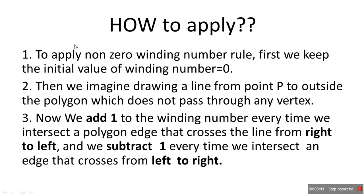How to apply the non-zero winding number rule: First, we keep the initial value of the winding number equal to zero. Second, we imagine drawing a line from point P to outside the polygon, which does not pass through any vertex. Third, we add 1 to the winding number every time we intersect a polygon edge that crosses the line from right to left. And we subtract 1 every time we intersect an edge that crosses from left to right.